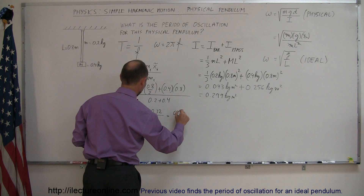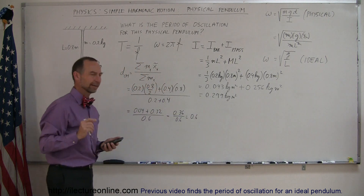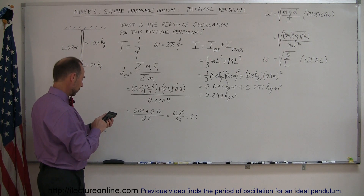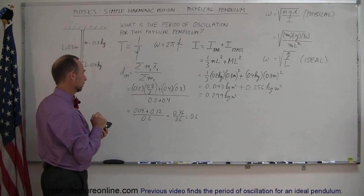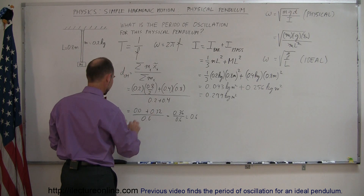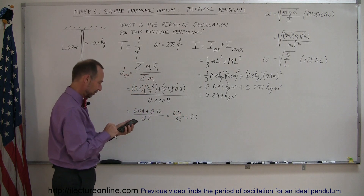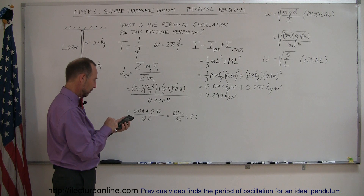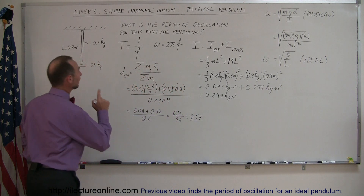That gives 0.04 plus 0.32 — actually, I made a mistake there. The first term is 0.2 times 0.4, which is 0.008, not 0.04. Let me redo this with the calculator: the numerator becomes 0.4, divided by 0.6, which equals 0.67 m. Good thing I checked with the calculator. So the distance to the center of mass is 0.67 meters.